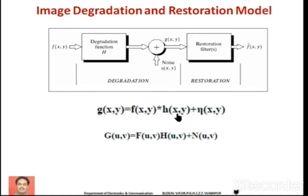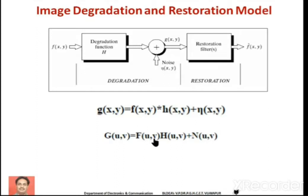Taking the Fourier transform of the degradation equation, we get: G(u,v) = F(u,v) · H(u,v) + N(u,v), where G(u,v) is the Fourier transform of g(x,y), F(u,v) and H(u,v) are the transforms of the input image and degradation function respectively, and N(u,v) is the Fourier transform of η(x,y). This is the equation written in the frequency domain.